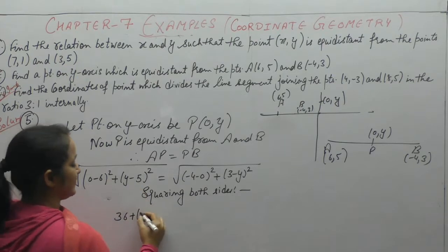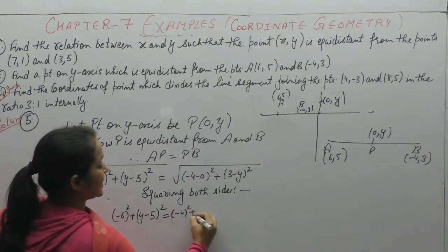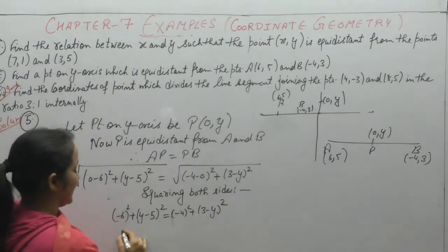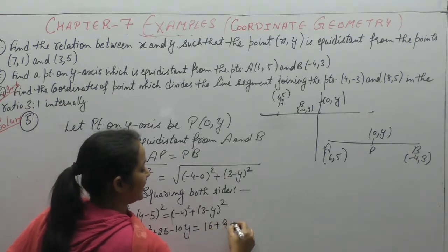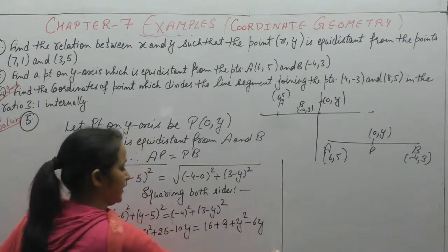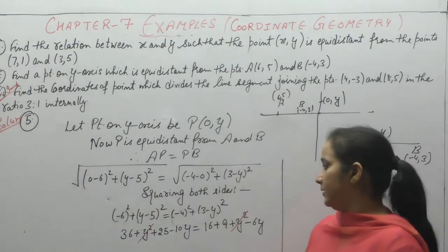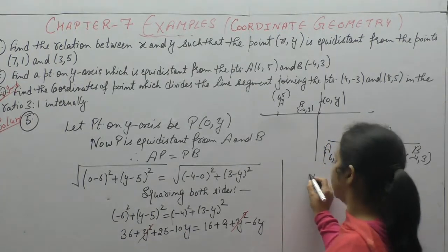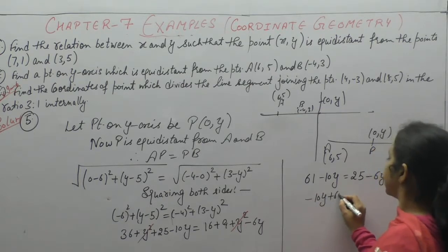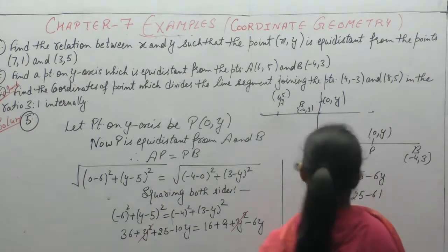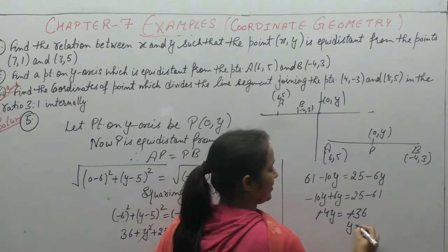After squaring: (0-6)² + (y-5)² = (0+4)² + (y-3)². This gives 36 + y² + 25 - 10y = 16 + y² + 9 - 6y. y² cancels. Simplifying: -10y + 6y = 25 - 61. So -4y = -36, therefore y = 9.